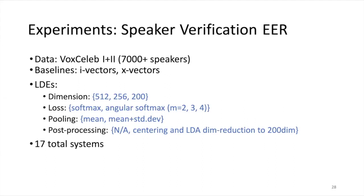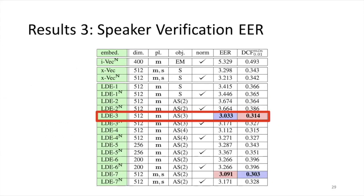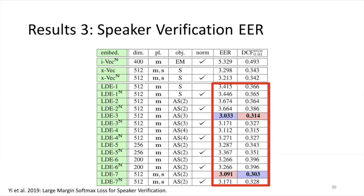These are the results of our speaker verification experiment. The first column is the speaker embedding type, the second is the embedding dimension, the third is the pooling method — either mean or both mean and standard deviation vectors. The fourth column is the training objective, the fifth is whether post-processing is applied, and the last two columns are objective measures for speaker verification, where lower numbers are better. We can see that LDE 3 achieved the best speaker verification results, and generally LDE has better numbers than our baselines. We want to emphasize that these numbers were state of the art a year ago, and there have been many improvements since.